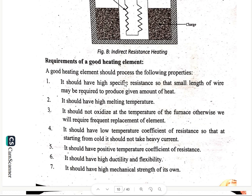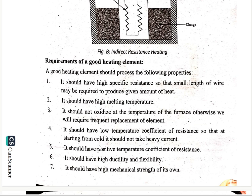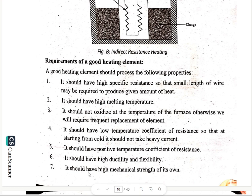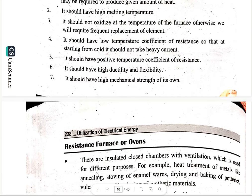For a good heating element, it should have high specific resistance so that a small length of wire may be required to produce a given amount of heat. It should have a high melting temperature, and it should not oxidize at operating temperature, otherwise frequent replacement would be needed. It should have a low temperature coefficient of resistance so that starting from cold it does not take excessive current. It should also have a positive temperature coefficient of resistance, high ductility and flexibility, and high mechanical strength.